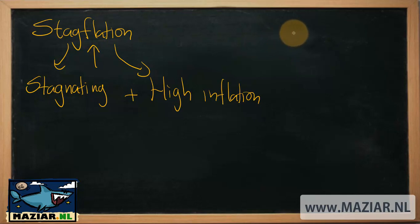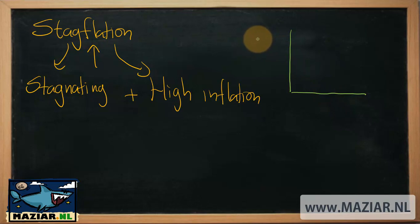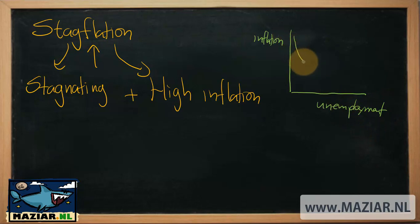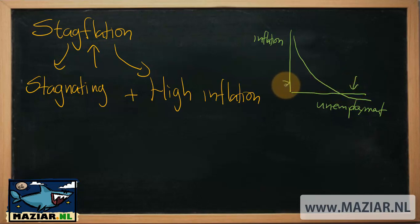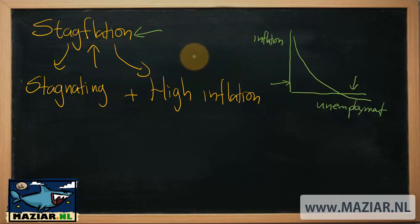Stagflation is a bizarre phenomenon. It is not in the standard scripts of Keynesian economics, because in Keynesian economics we work with the Phillips Curve, which shows an inverse relationship between inflation and unemployment. So if you have a slow economy with a lot of unemployment, you will not have much inflation. That inverse relationship is what we usually observe, but in periods of stagflation you get a freak phenomenon that should not exist according to prevailing macroeconomic theory.